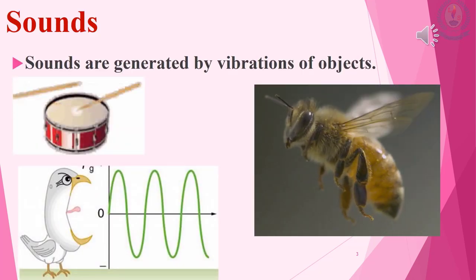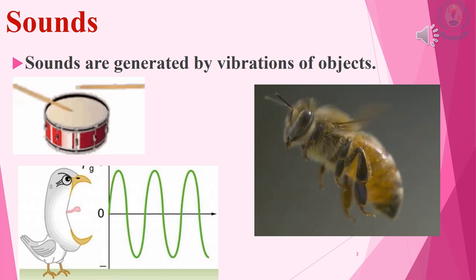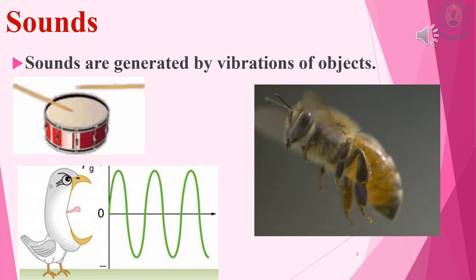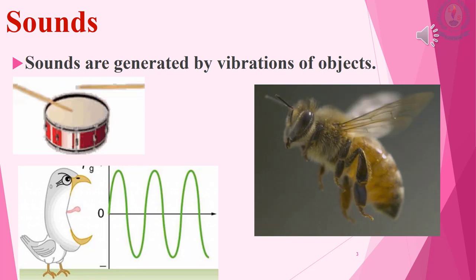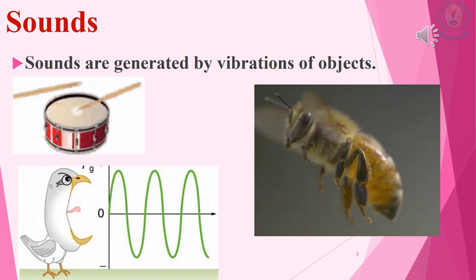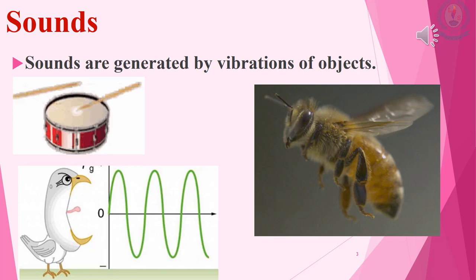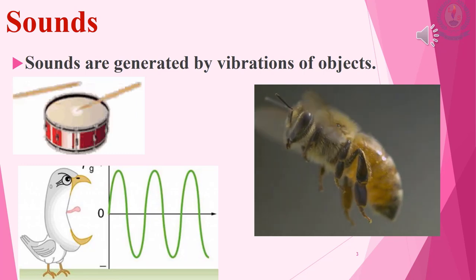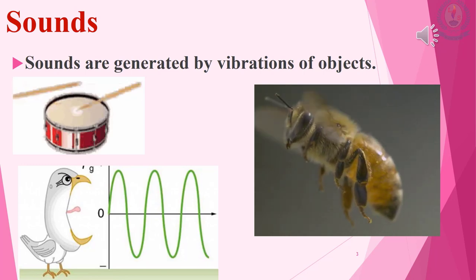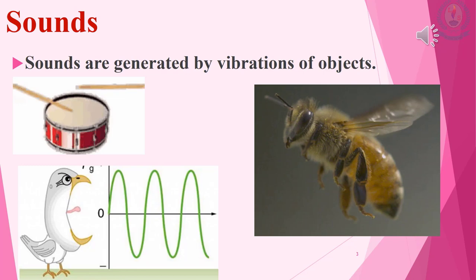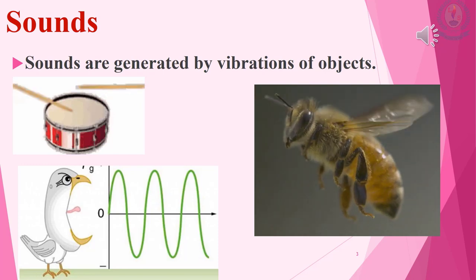Do you know how sound is generated? Sound is generated when materials or objects vibrate through a medium. In this slide you can see that when a drum is beaten, a sound is generated. Many animals have the capability of producing sounds by vibrating organs in their bodies. A bee makes sound by making its wings move to and fro repeatedly very fast. The sound is transmitted as sound waves in all directions, and we hear those sounds when the sound waves reach our ears.